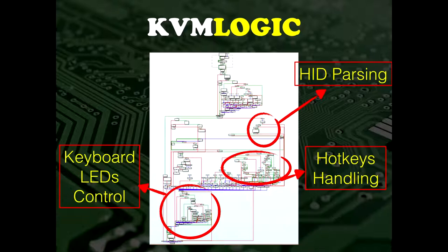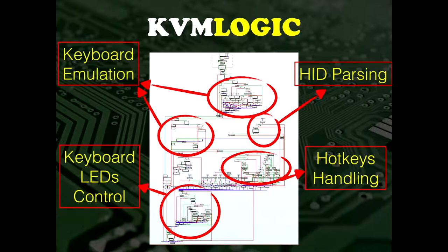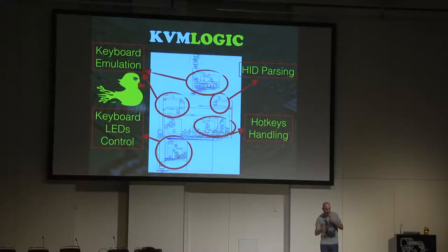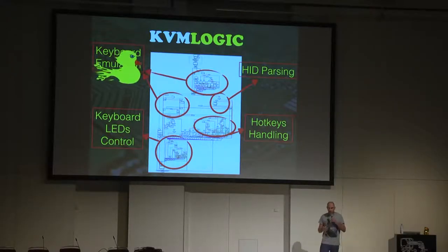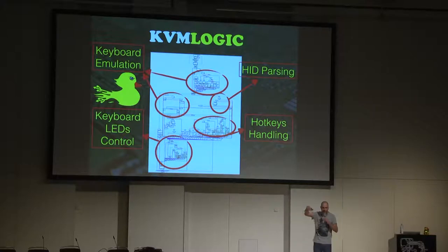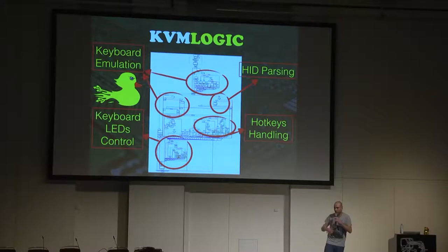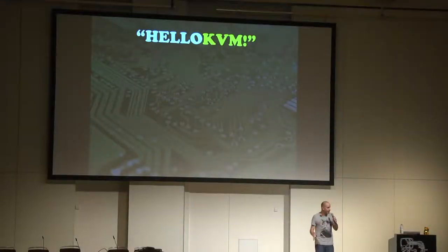Once we understood the assembly, we could properly analyze the code. A screenshot from IDA shows the main function of this KVM divided into interesting parts: HID parsing — where actual keystrokes are processed; hotkey processing — switching ports on combo key presses; LED control — flashing keyboard LEDs for various functionalities. But the really interesting part was keyboard emulation. This KVM isn't simply passing through keyboard input — it IS a keyboard. It's emulating a keyboard, meaning we can put a rubber ducky inside our KVM.